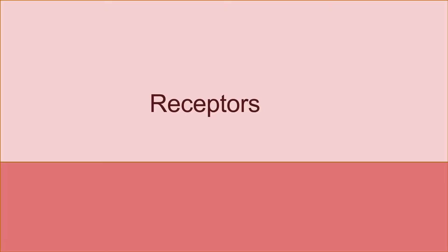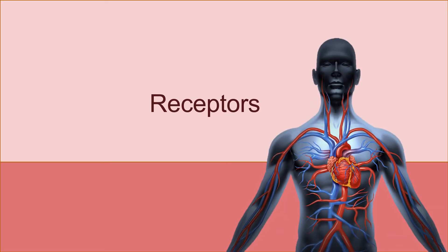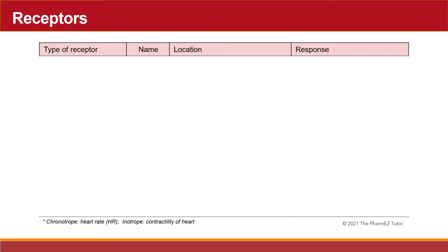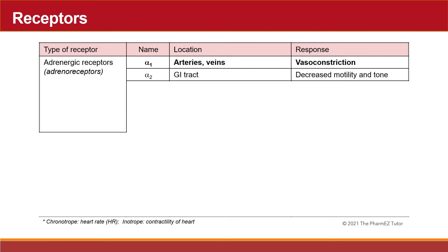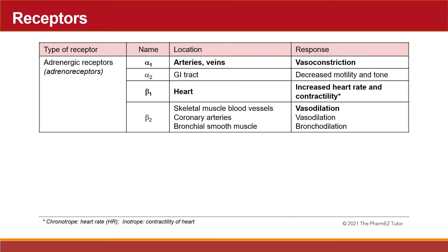In any discussion about cardiac drugs, we need to first start off by reviewing where these agents work, namely at receptors in the heart and blood vessels. The first type of receptors are the adrenergic receptors. The most important are the alpha-1 receptors located in the vasculature — in the arteries and veins — and when activated, they cause vasoconstriction in the periphery.